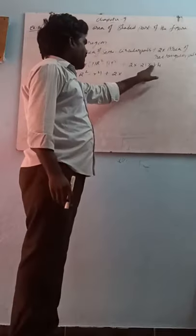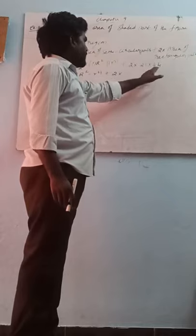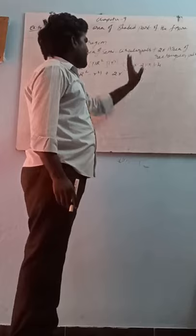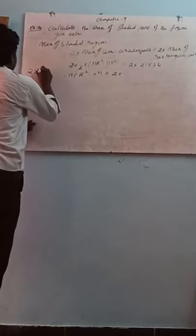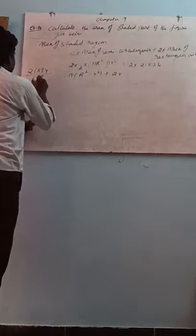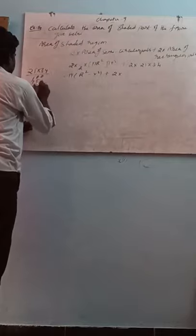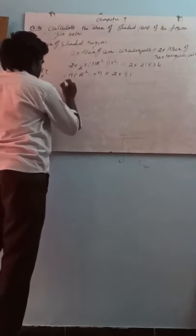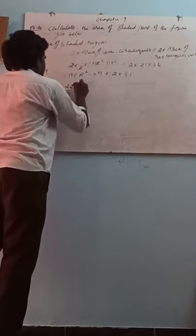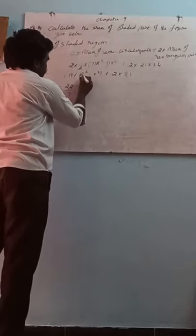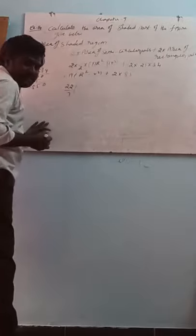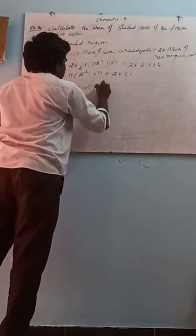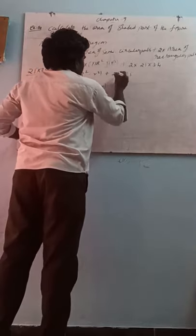2 into 25 into 3.4 equals 170 cm². Now capital R² minus small r² is in the form of a² minus b², which equals (a + b)(a − b). So capital R plus small r, into capital R minus small r, plus 170. That is: 22 by 7 into (9.55 + 6.15) into (9.55 − 6.15) plus 170. That gives 22 by 7 into 15.7 into 3.40 plus 170.